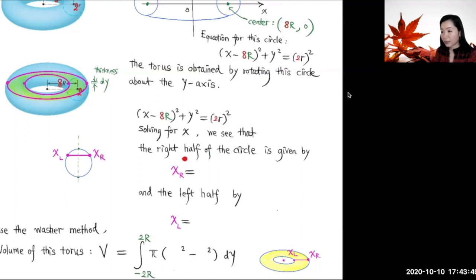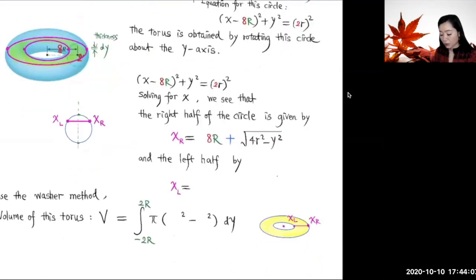We see the right half of the circle is given by x_R = 8r + √(4r² - y²). Now the left side of this circle is given by x_L = 8r - √(4r² - y²). The plus here corresponds to the right side, the minus here corresponds to the left side of this circle.